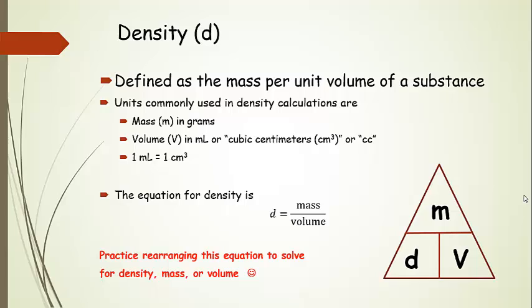So now we're ready to talk about density. Density is basically the amount of mass per unit volume of a certain substance. Masses are generally given in grams. And volumes can either be milliliters or cubic centimeters or cc's. And 1 milliliter is equal to 1 centimeter cubed, which is equal to 1 cc.